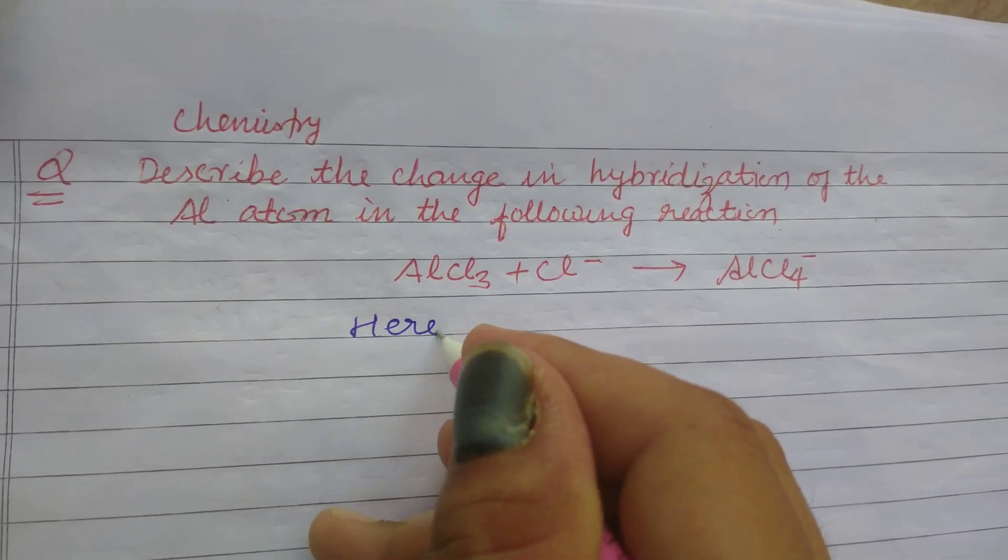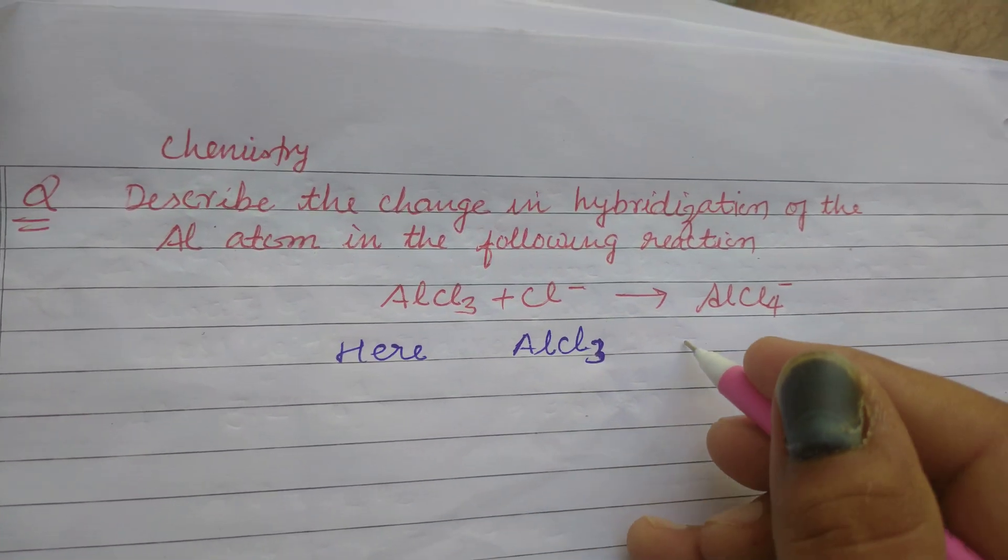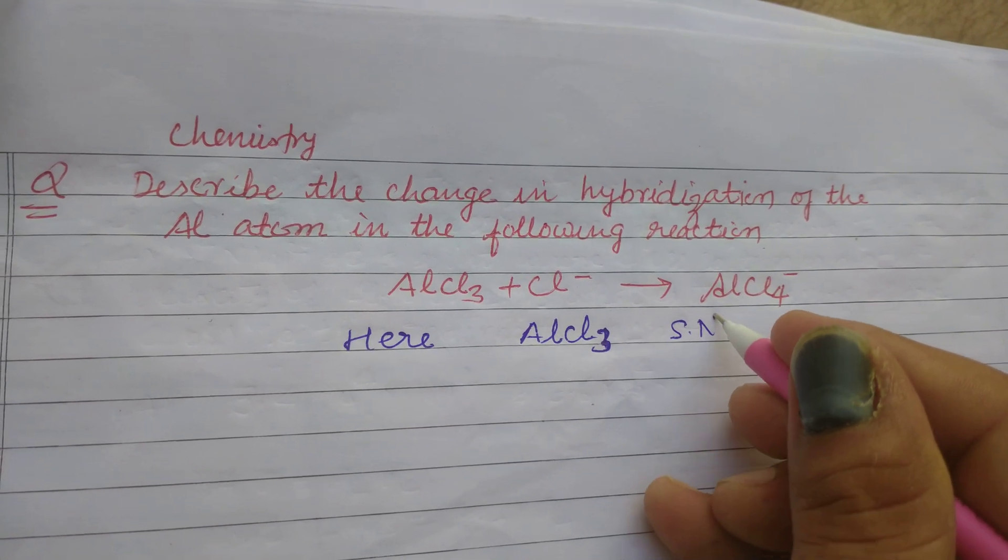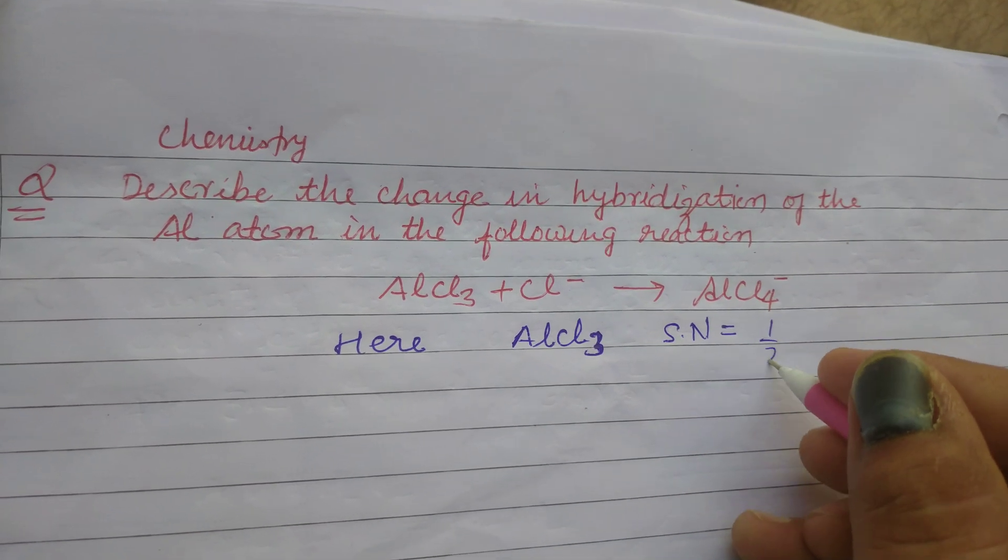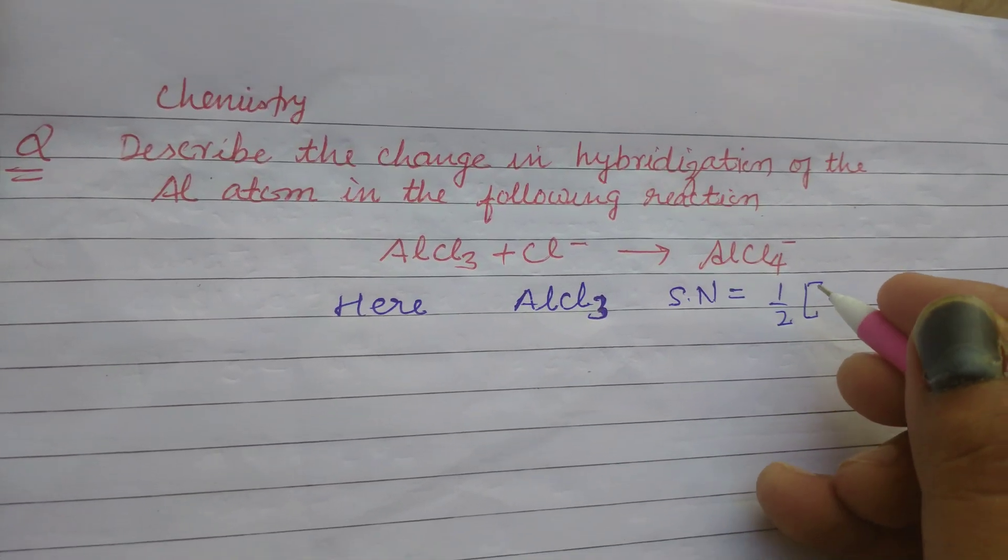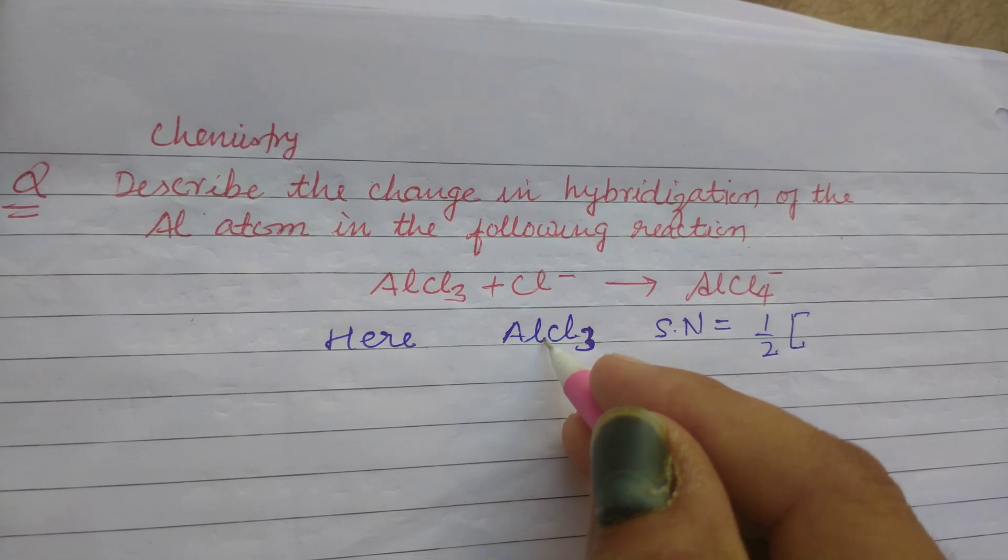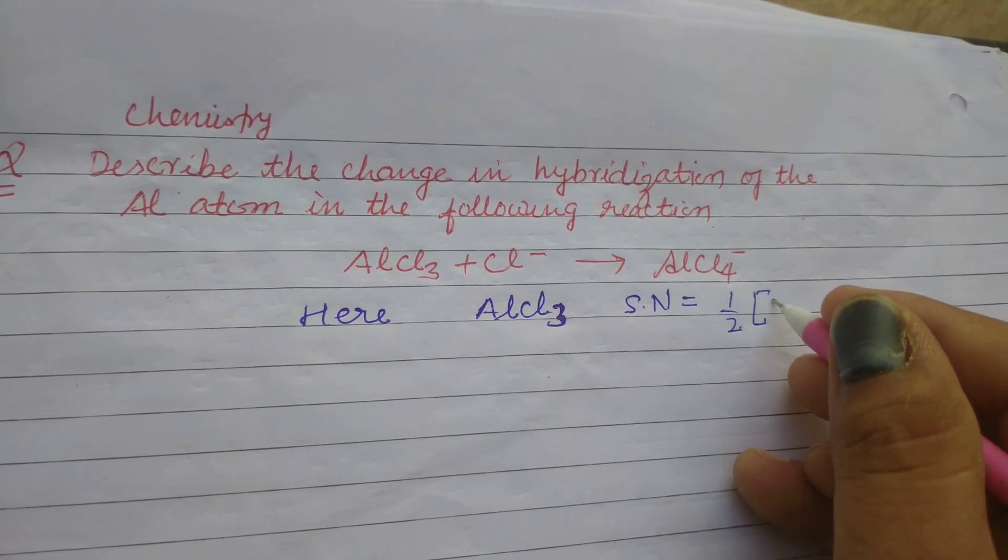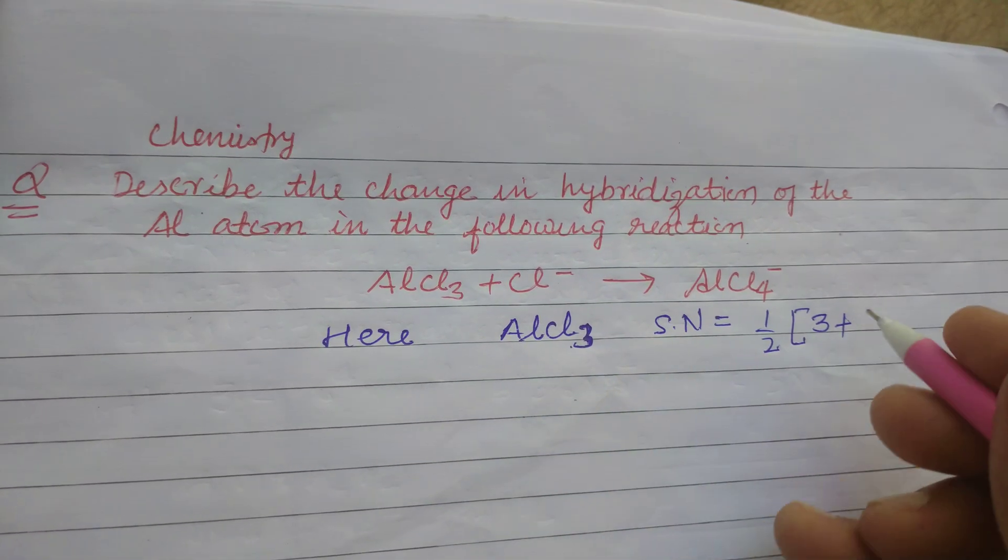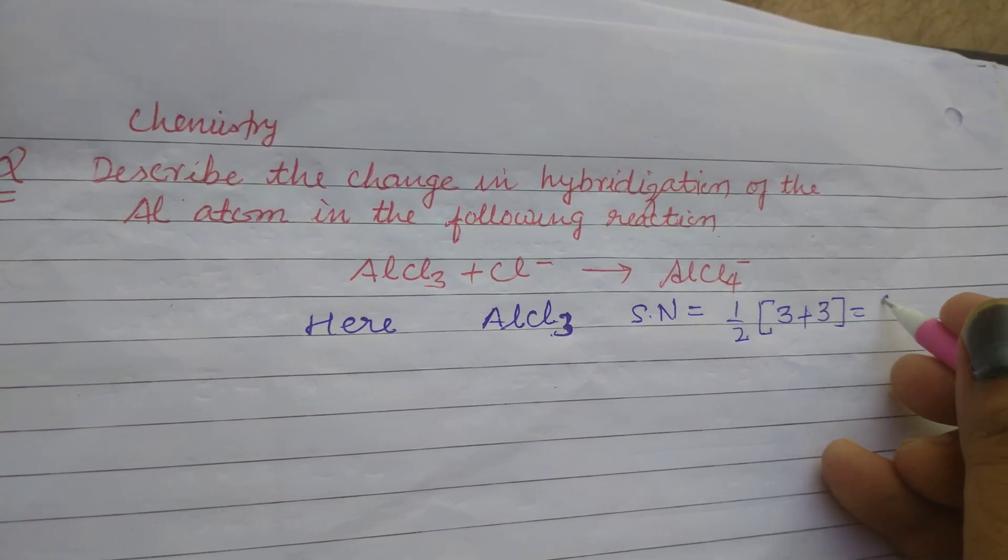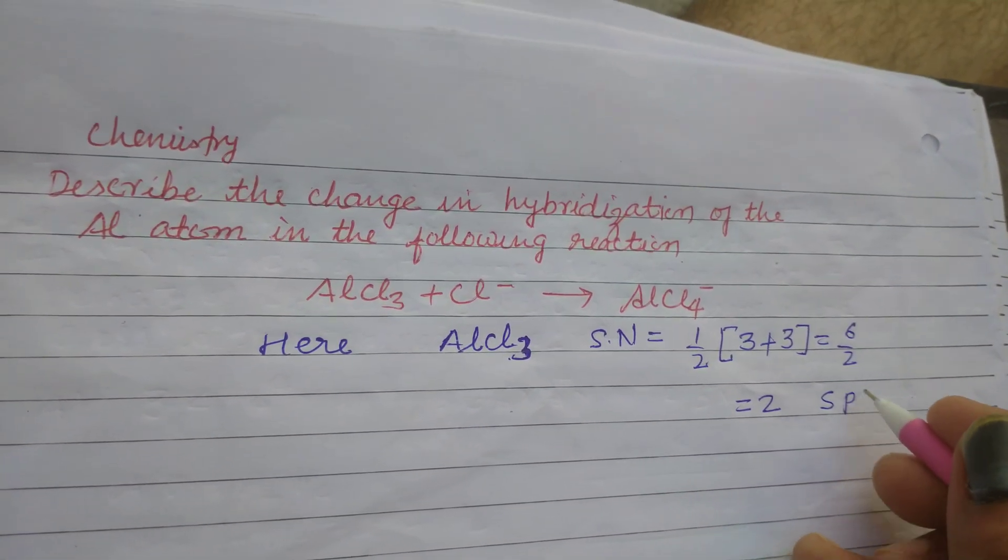Here for AlCl3, first we find the steric number in this compound. The steric number is half of valence electrons in the central atom. Aluminum is the central atom here. Aluminum has 3 valence electrons and there are 3 chlorine atoms. So 3 plus 3, this is 6 by 2, we get 2. So it is sp2 hybridized.